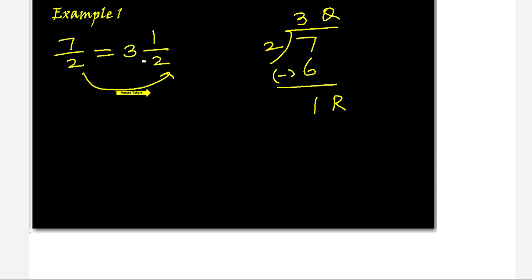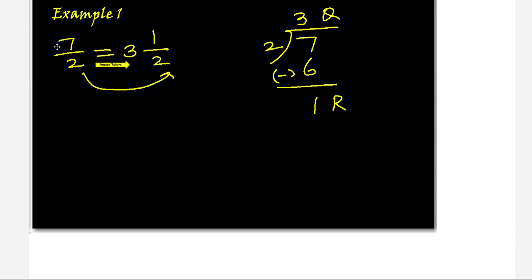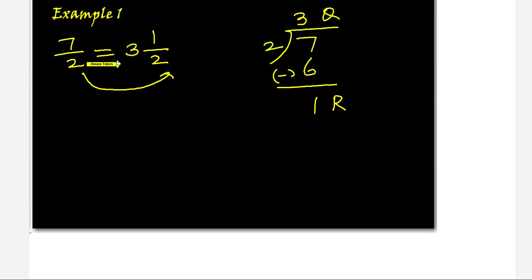It's very easy! Now if you want to check your answer, use the other conversion — mixed number back to improper. Multiply the denominator by the whole number: 3 twos are 6, then add the numerator: 6 plus 1 equals 7, over 2. That gives 7 over 2, which is the original fraction — correct! This is how you check the answer.